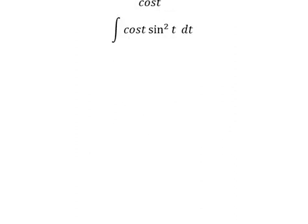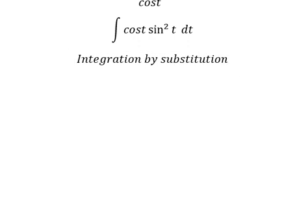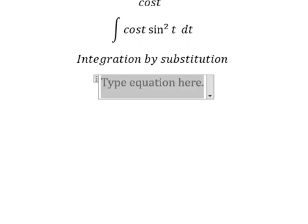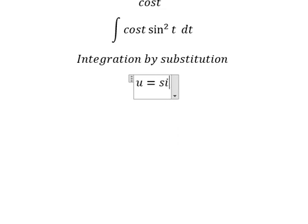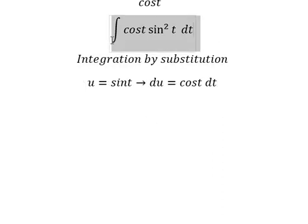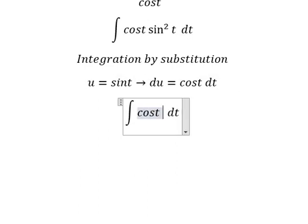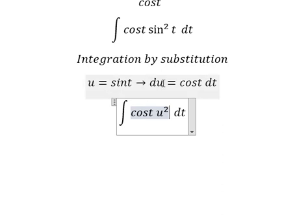So we can use integration by substitution. I will put u equal to sin(t). Then we differentiate both sides and we have cos(t) dt. So sin(t) becomes u, and cos(t) dt we change for du.